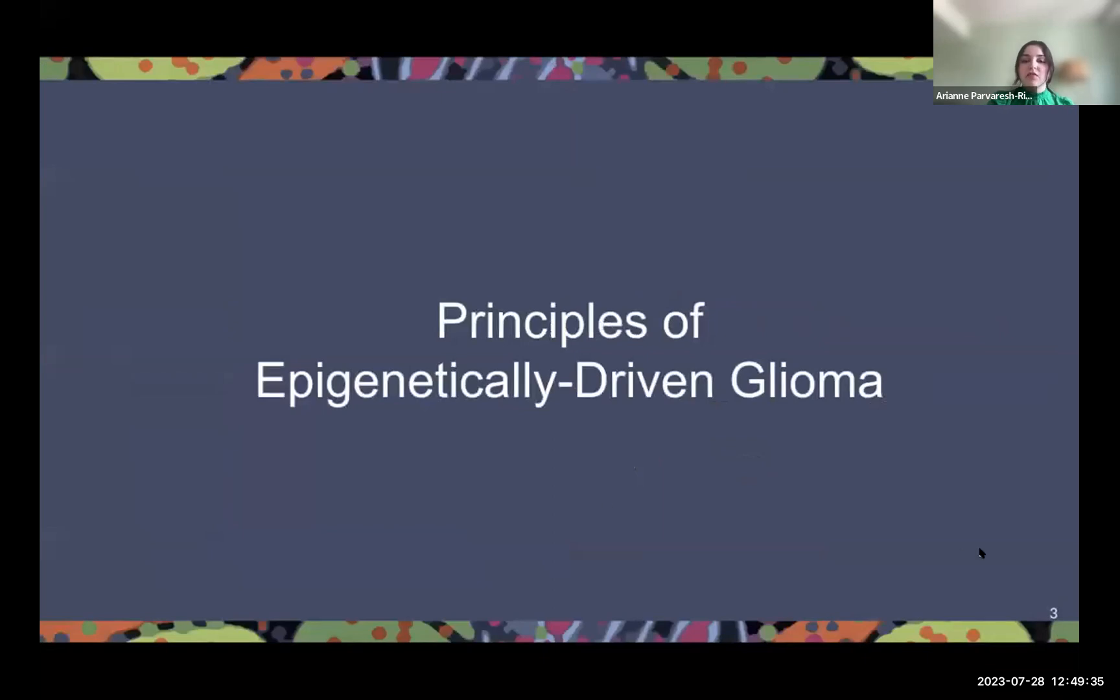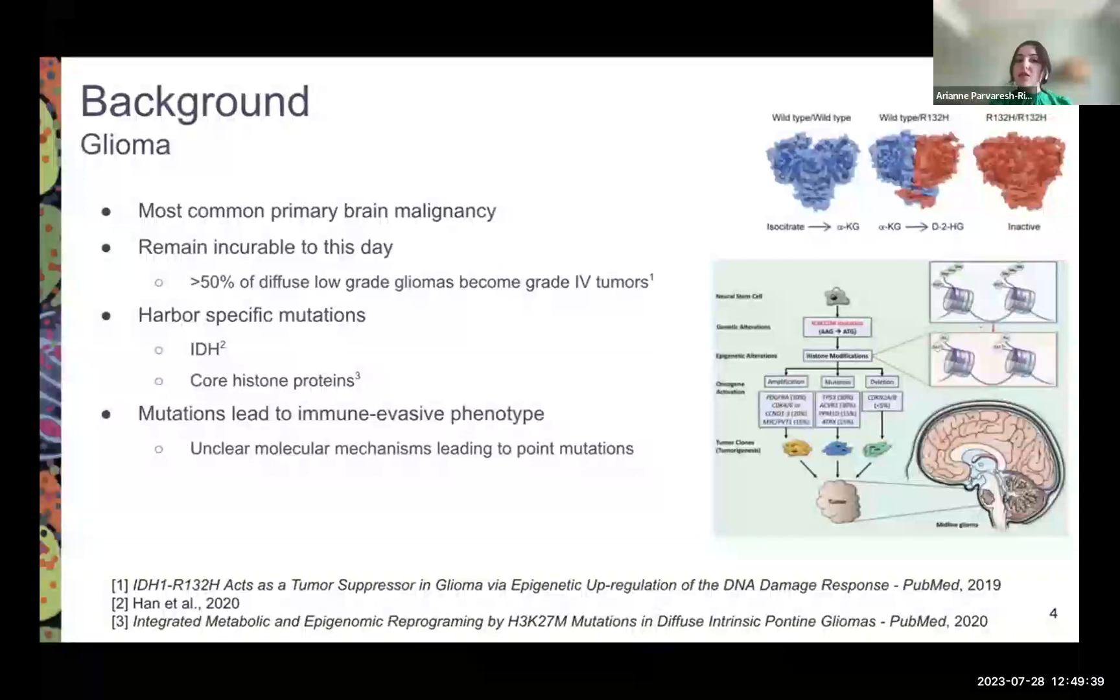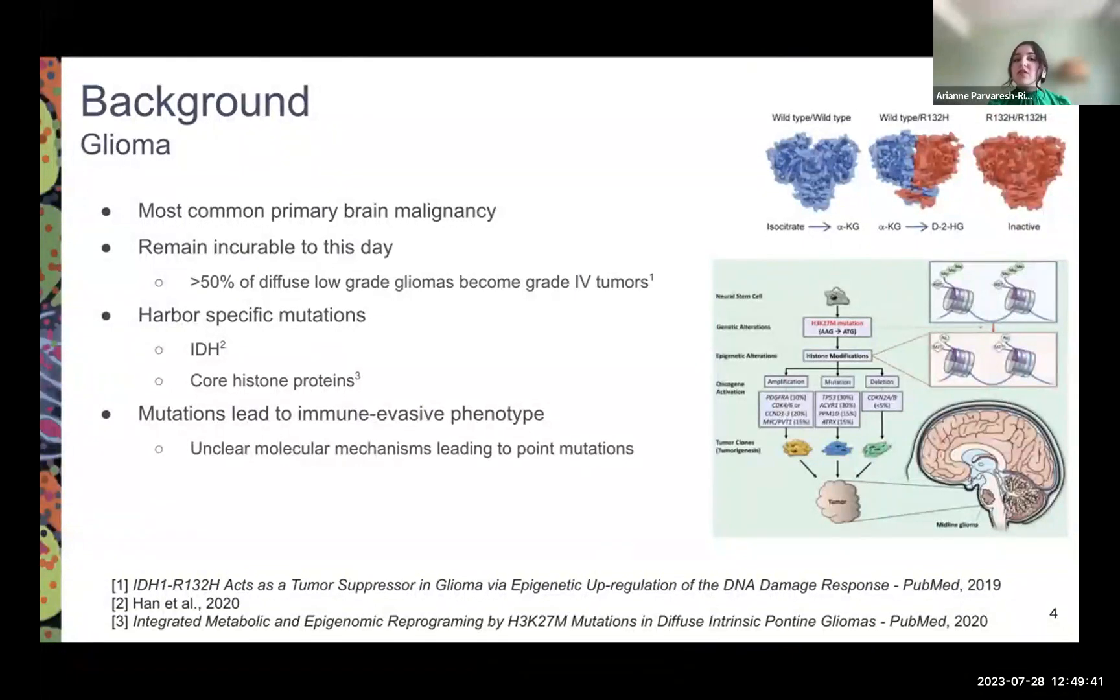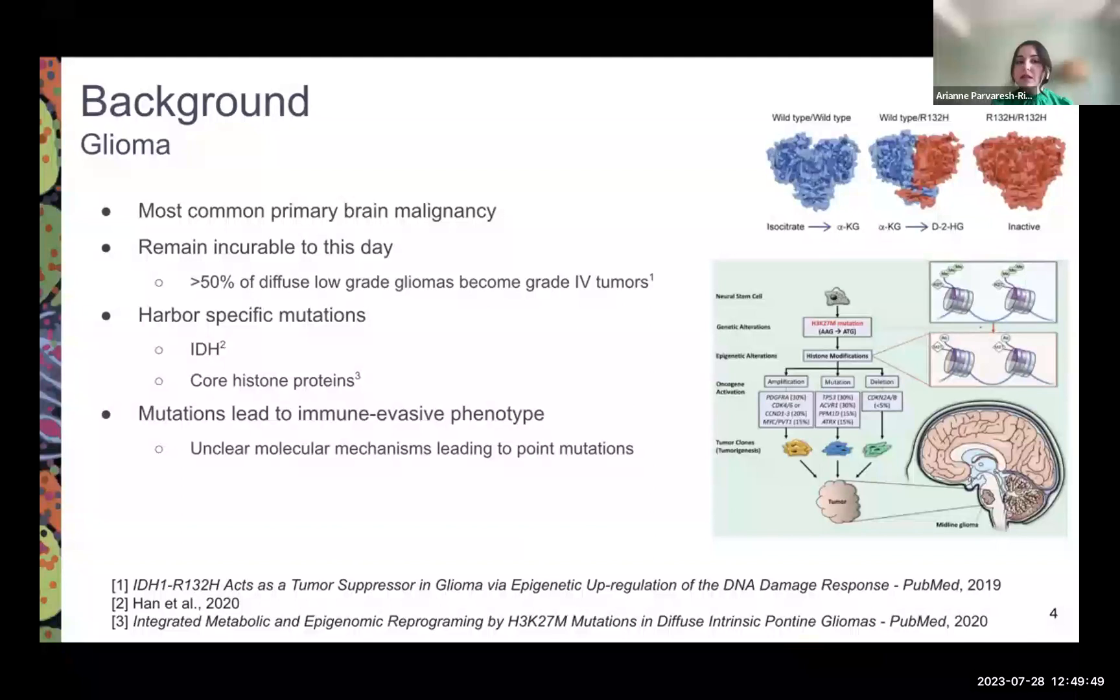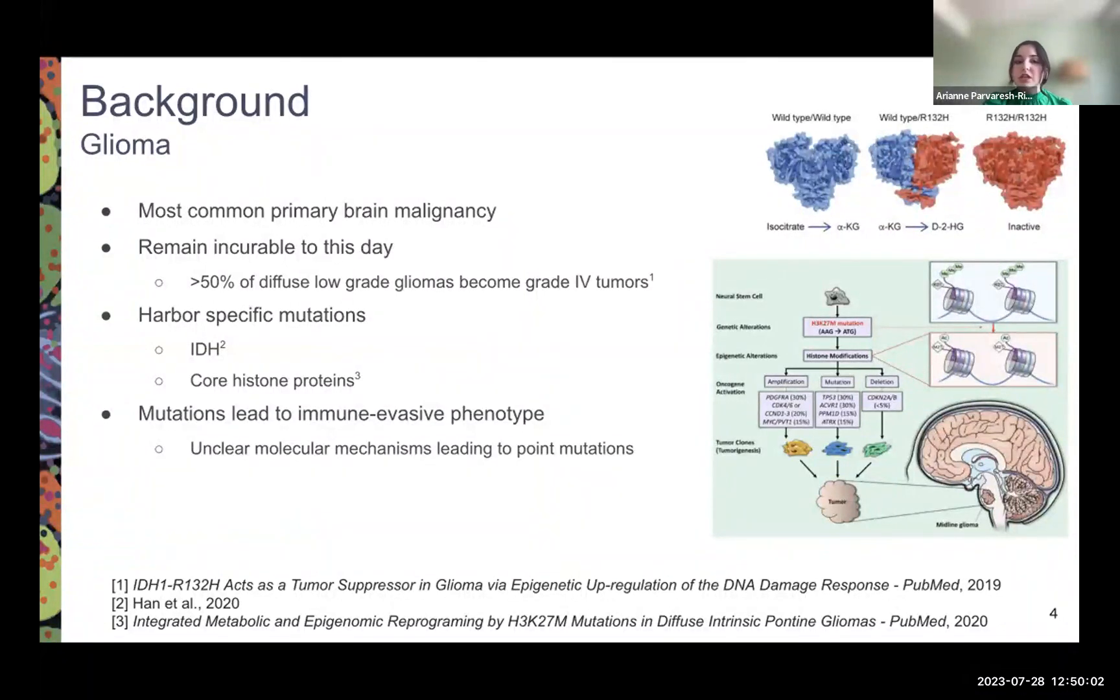To understand the principles of epigenetically-driven gliomas, it's important to understand gliomas as a whole. Gliomas are the most common primary brain malignancies that remain incurable to this day, unfortunately. Between 50% to 75% of diffuse low-grade gliomas become grade 4 tumors with a life expectancy of less than 5 years and a survival rate of less than 20% in the pediatric population.